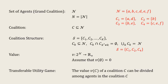Definitions. We have a set of agents, script N. Here's an example: N is {A, B, C, D, E, F}. These are the agents of this grand coalition. The italic N is the number of agents, that is the cardinality of the set of agents, the cardinality of the grand coalition.